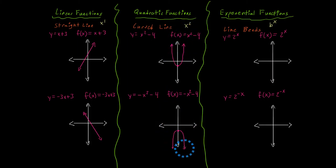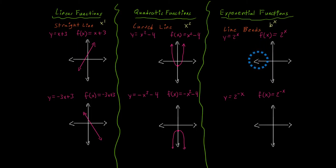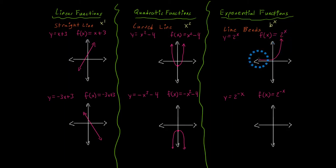Moving on to exponential functions — keep in mind that x is in the exponent, indicating we have an exponential function. If we were to graph it, the line is going to have a bend to it. For f of x equals 2 to the x power, it would start out level — really close to the x-axis but not touching — and then it grows rapidly. The line is really close to the x-axis but never touches it, and that's just for this specific function.